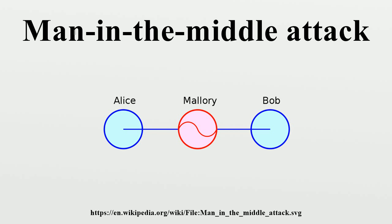A man-in-the-middle attack is a similar strategy and can be used against many cryptographic protocols. One example is active eavesdropping, in which the attacker makes independent connections with the victims and relays messages between them to make them believe they are talking directly to each other over a private connection, when in fact the entire conversation is controlled by the attacker. The attacker must be able to intercept all relevant messages passing between the two victims and inject new ones. This is straightforward in many circumstances — for example, an attacker within reception range of an unencrypted Wi-Fi wireless access point can insert himself as a man-in-the-middle.